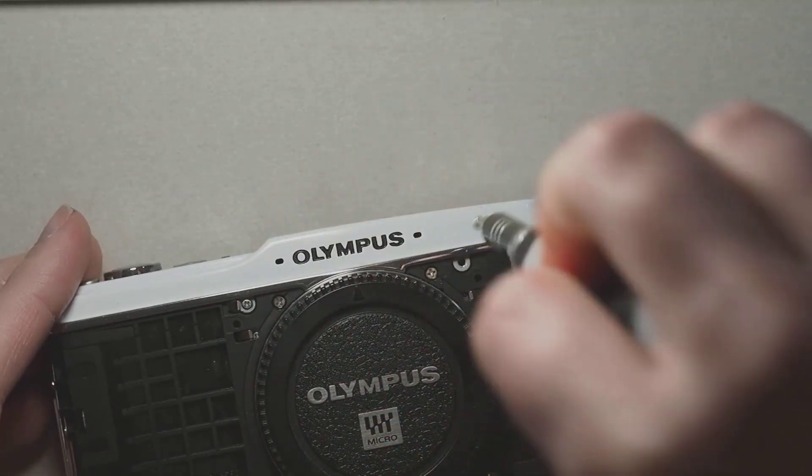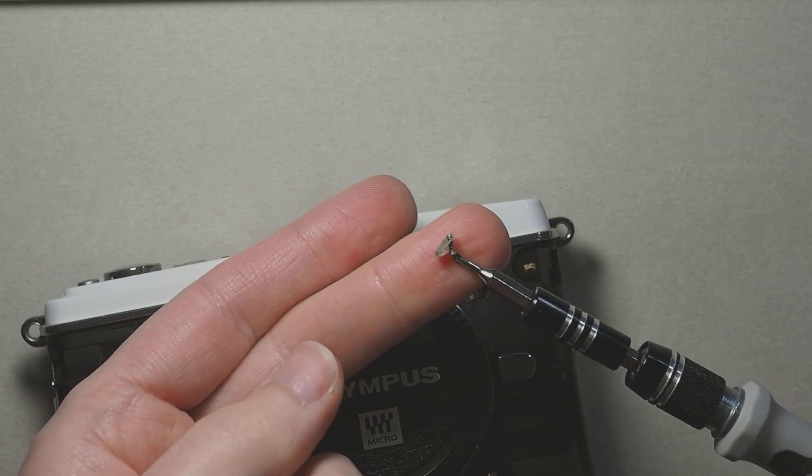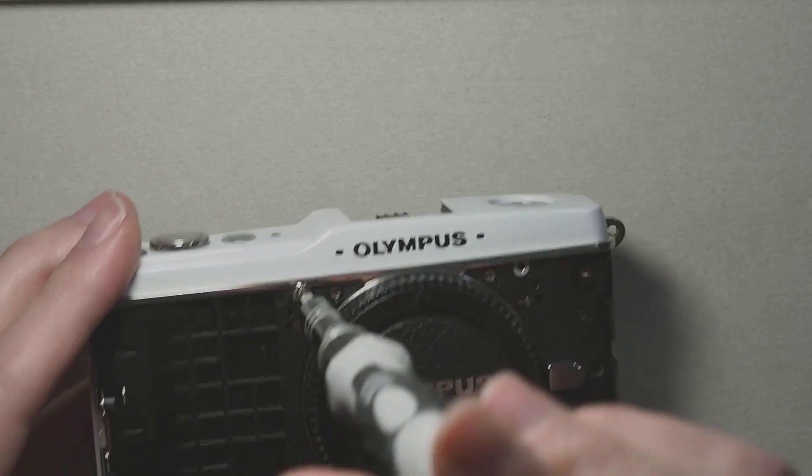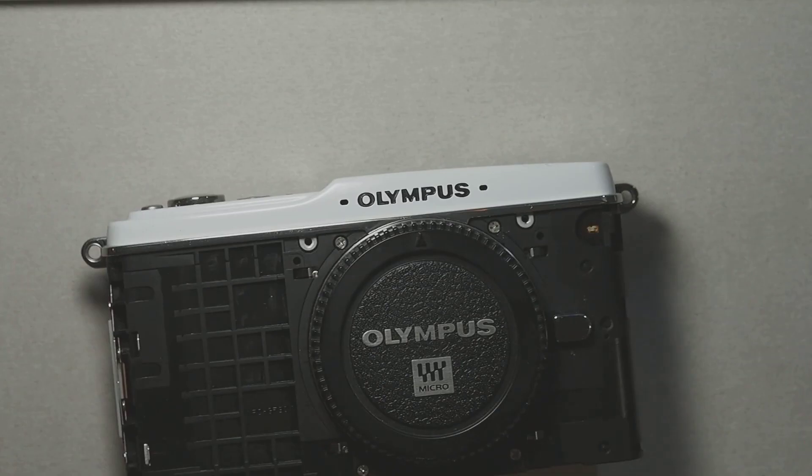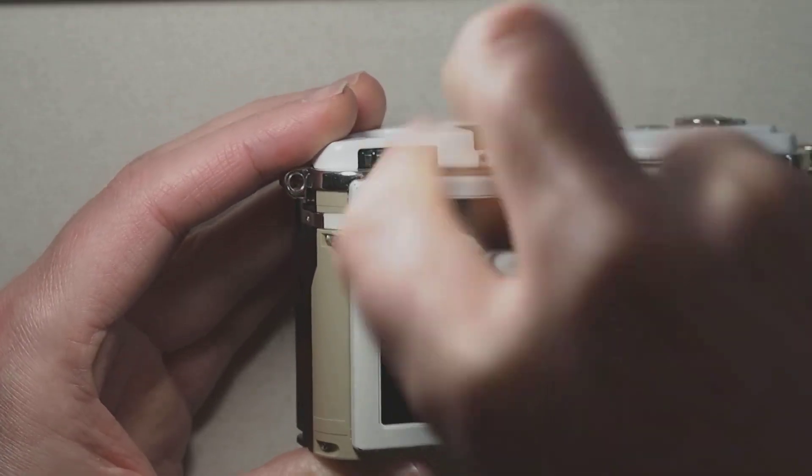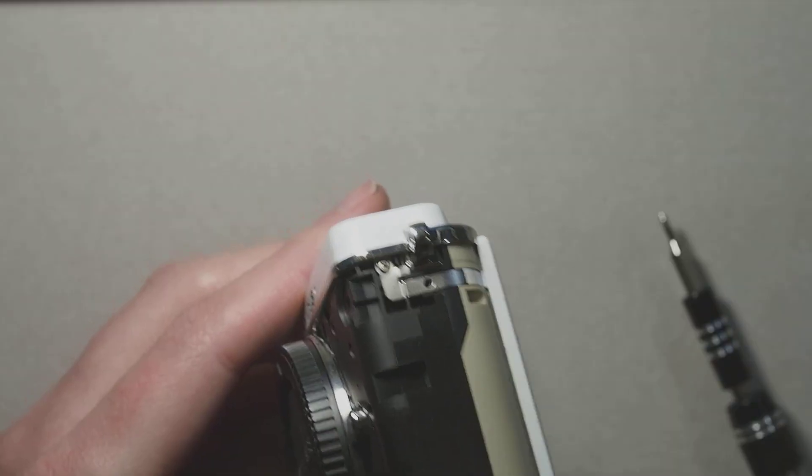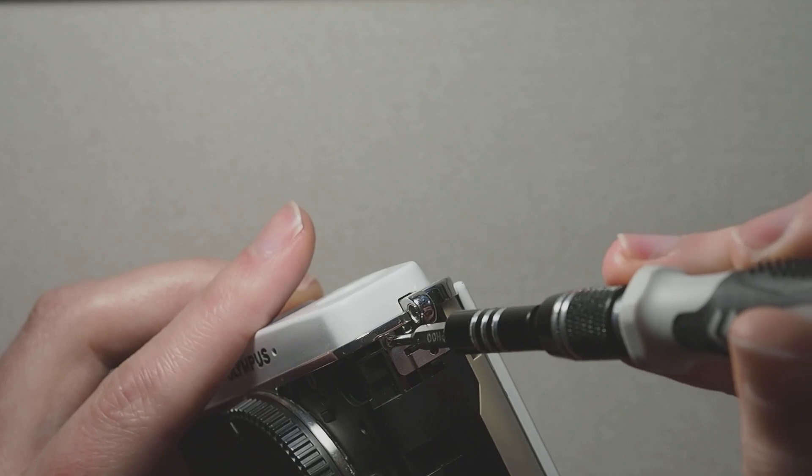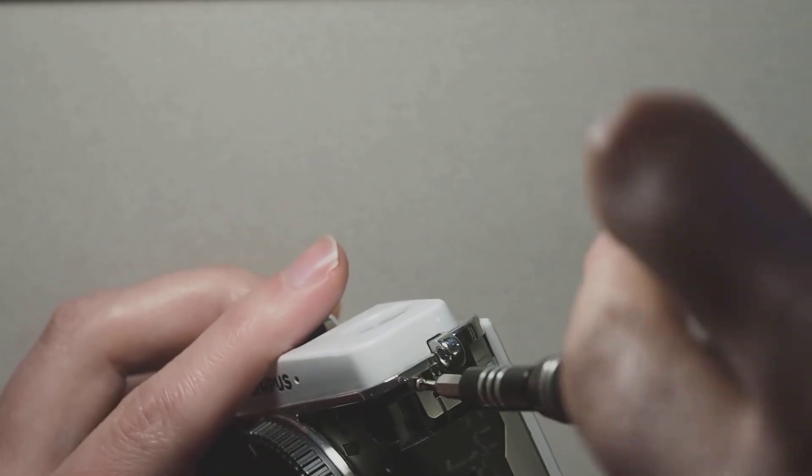This reveals two more screws holding the top cover in place with these springy tabs. Now we can start loosening the display panel with these screws on the left edge. On both sides there are screws in front of the strap connections which also hold the top cover in place.